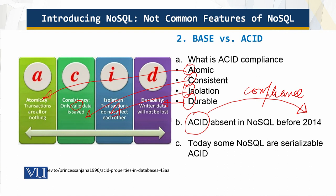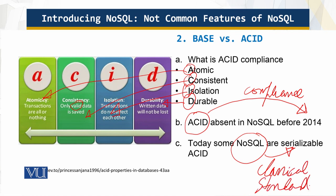Even today, there are some NoSQL solutions that are serializable ACID, meaning they are not classical or standard ACID. So in this context we talk about BASE, which is as opposed to ACID. In subsequent modules I will explain what BASE consists of. So let's move ahead.